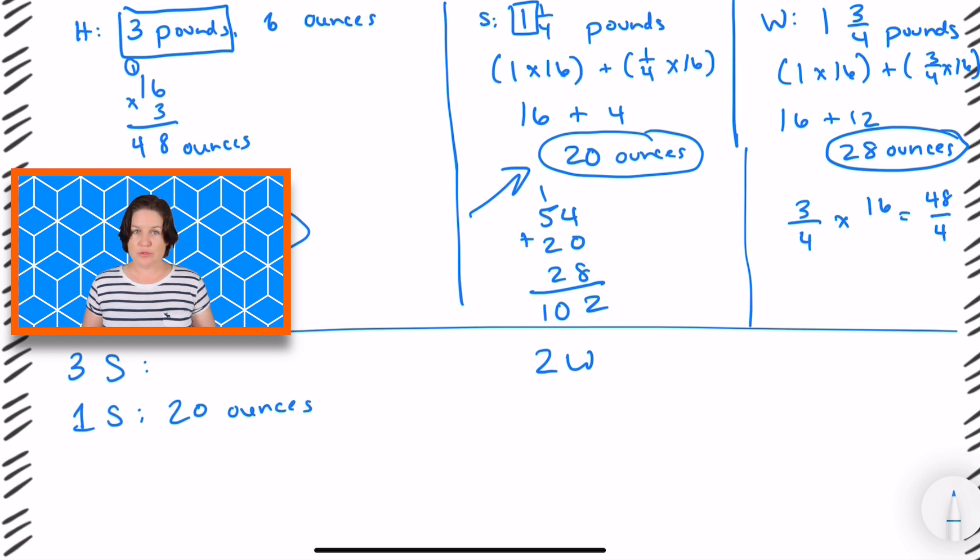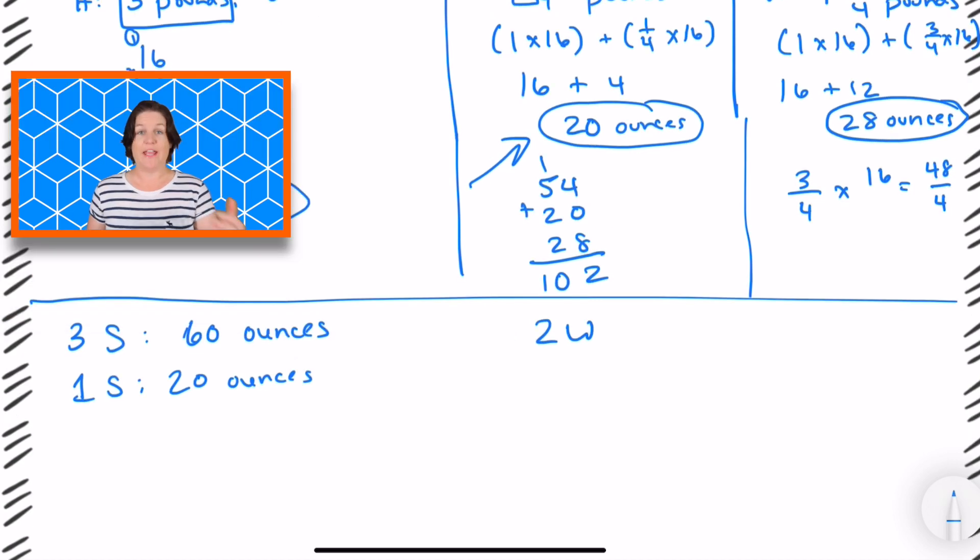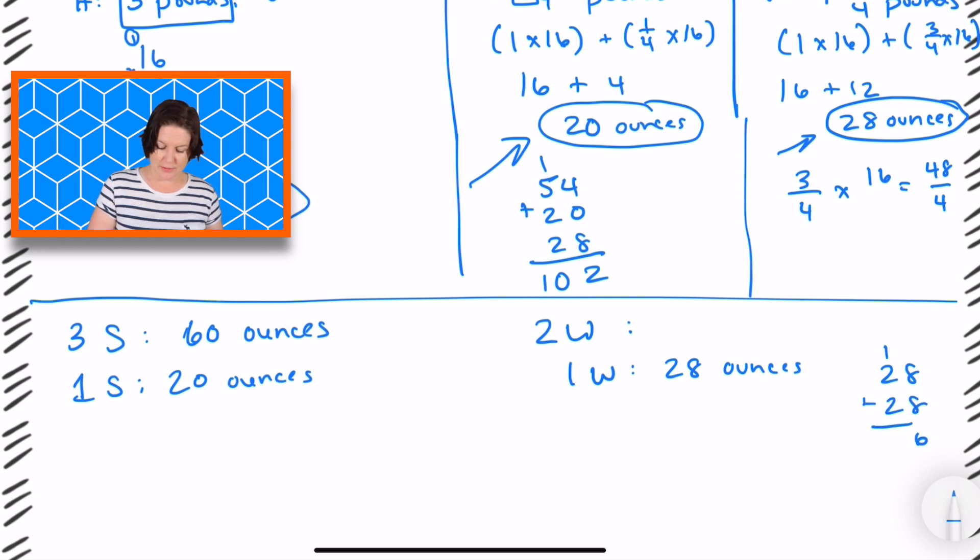So 3 screwdrivers would be 20, 40, 60 ounces. Alright. And we have 2 wrenches. One wrench equals 28 ounces. We just figured that out right over here. So 28 and another 28 would be 56. So that'd be 56 ounces.